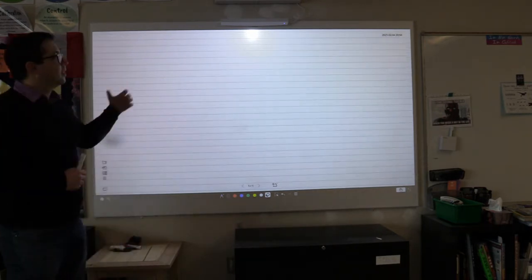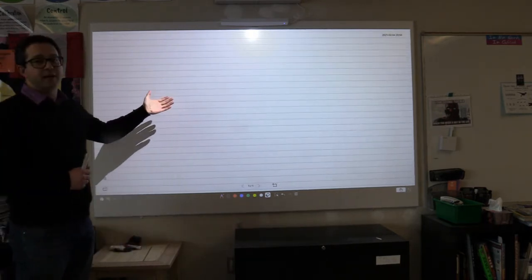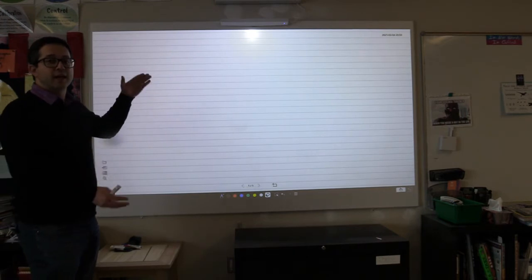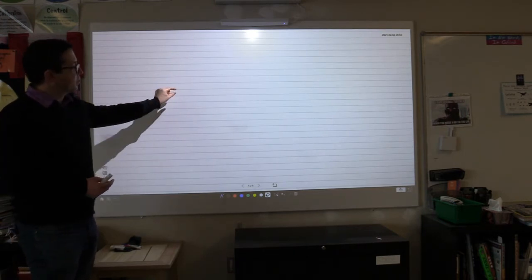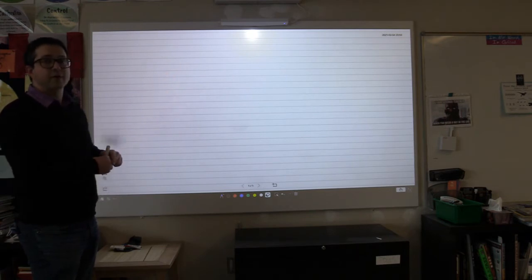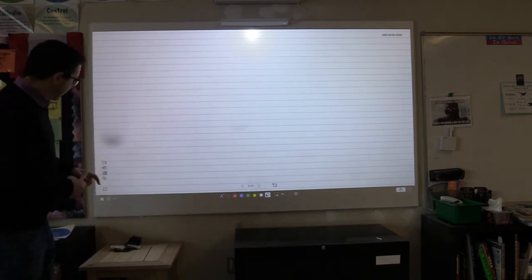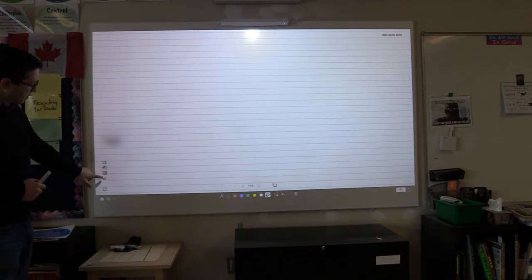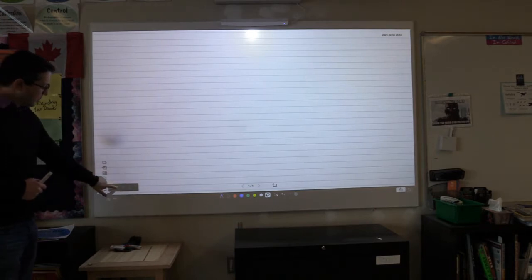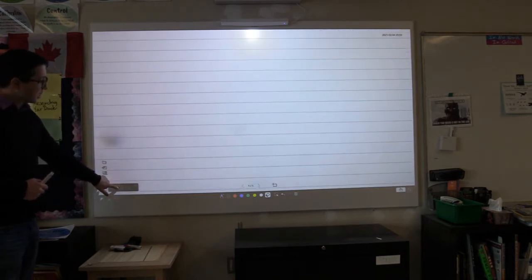Now that we've selected a background, we can also zoom in and out on that background. For instance, if I want my lines to be farther apart for ease of writing on the board, I can come over here to the magnifying glass with the plus sign in it and I can zoom in. As I zoom in, the lines get wider and wider.